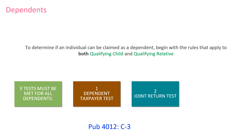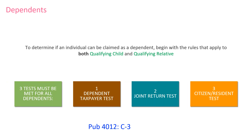The citizen/resident test: to be claimed as a dependent, a person must be a U.S. citizen, a U.S. resident alien, a U.S. national, or a resident of Canada or Mexico.